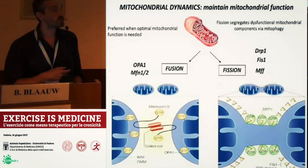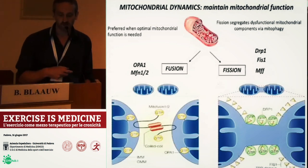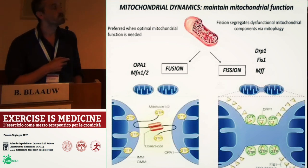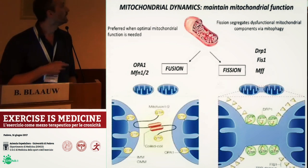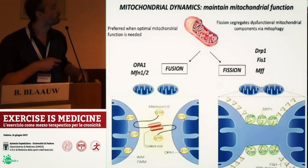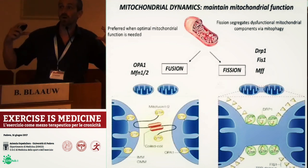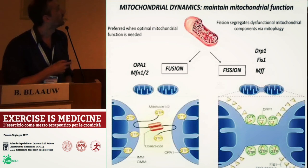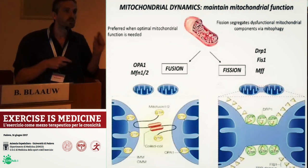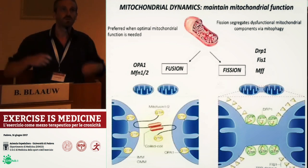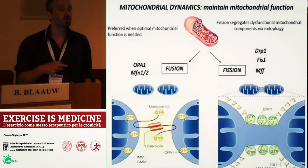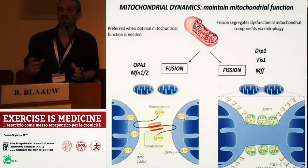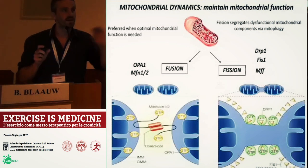Also here in Padova, by the group of Luca Scorrano, the important proteins regulating mitochondrial dynamics were identified. Mitochondrial fusion — fusing two mitochondria to make a bigger one — actually leads to an increase in energy production, so in ATP production, which is a positive situation. Mitochondrial fission, segregating one mitochondrion into two, occurs for example when part of the mitochondrial network is not functioning properly and needs to be taken away and degraded.